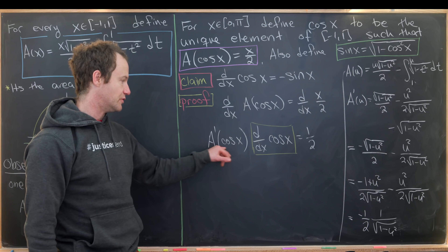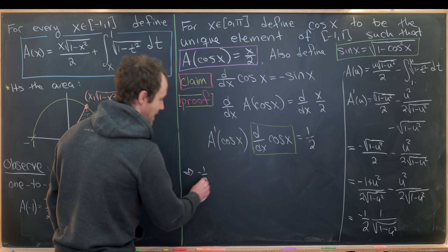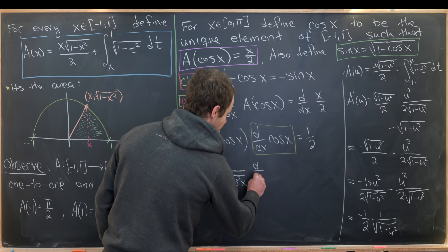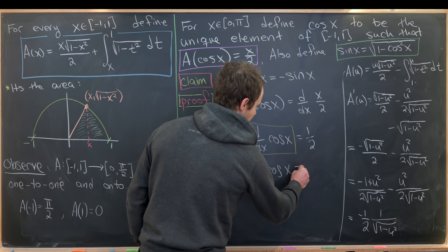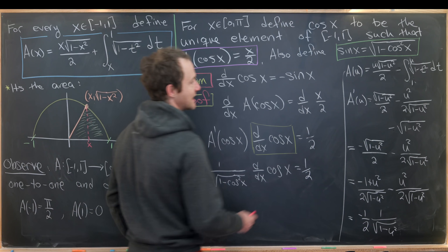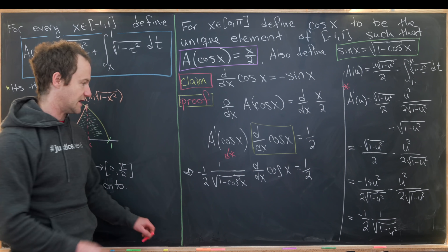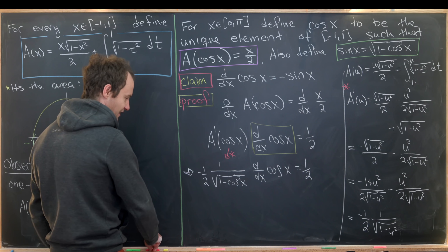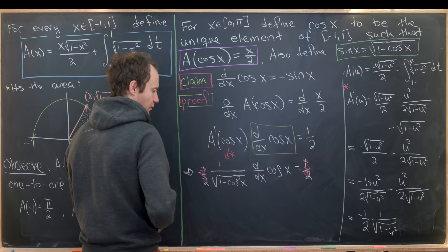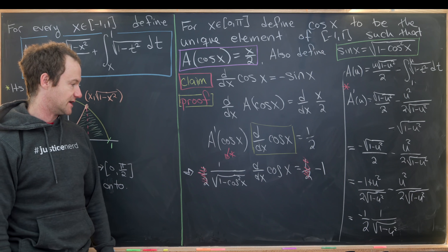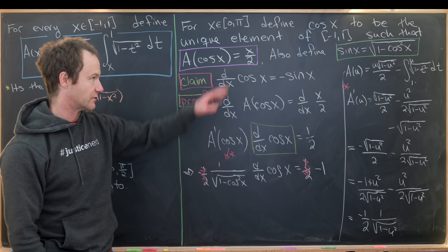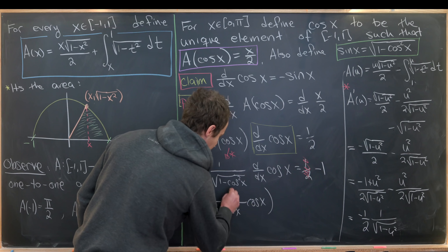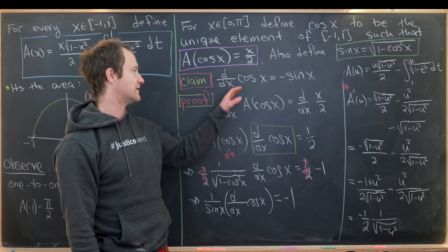Substituting u with cosine x gives: negative one half times one over sqrt(1 minus cosine squared x), times the derivative of cosine of x, equals one half. Canceling the halves leaves a negative one on the right. Since sqrt(1 minus cosine squared x) is exactly sine of x, we get one over sine of x times the derivative of cosine of x equals negative one. Cross-multiplying by sine gives the derivative of cosine of x equals negative sine of x.